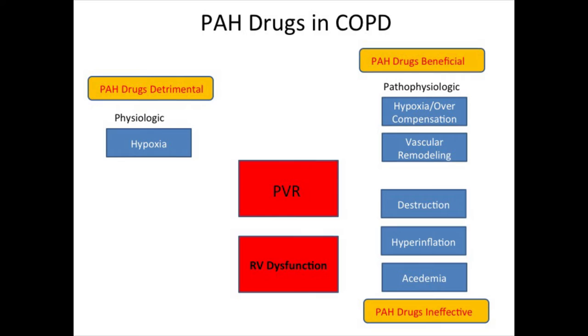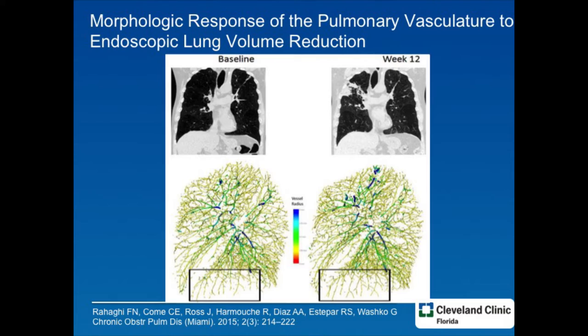The cards are not stacked in our favor in the use of our drugs in COPD, partly because the pathophysiology is more complicated than pulmonary hypertension. In work by Rahagi, you can see that in lung volume reduction surgery after the valves were placed, algorithms were developed to look at the vascular bed before and after various interventions — specifically endoscopic lung volume reduction.